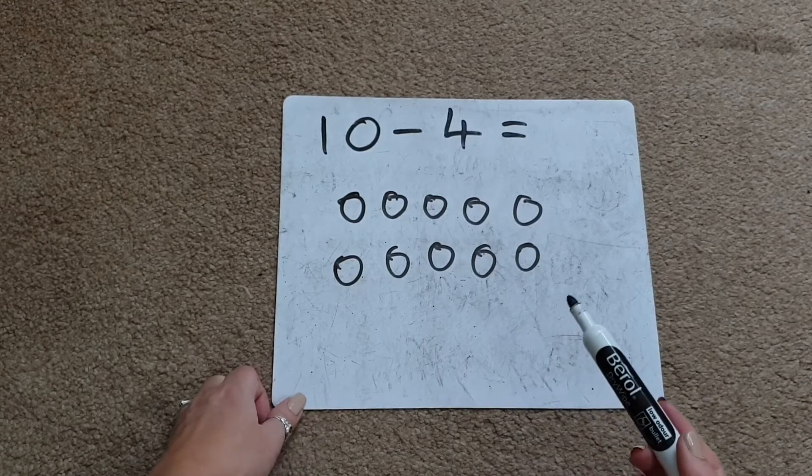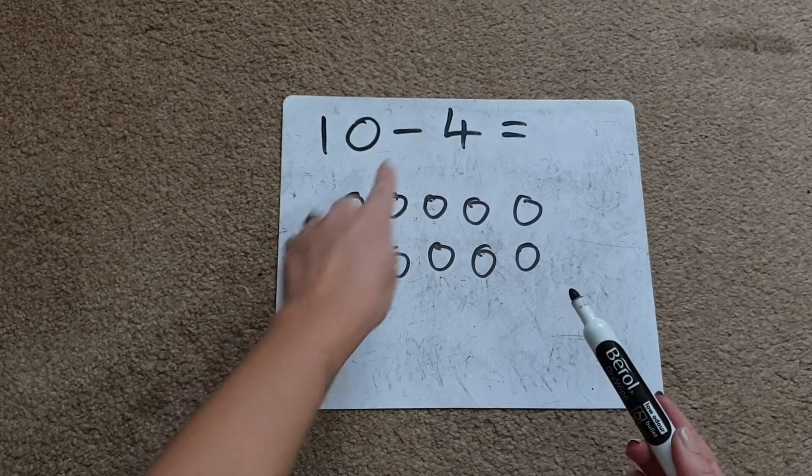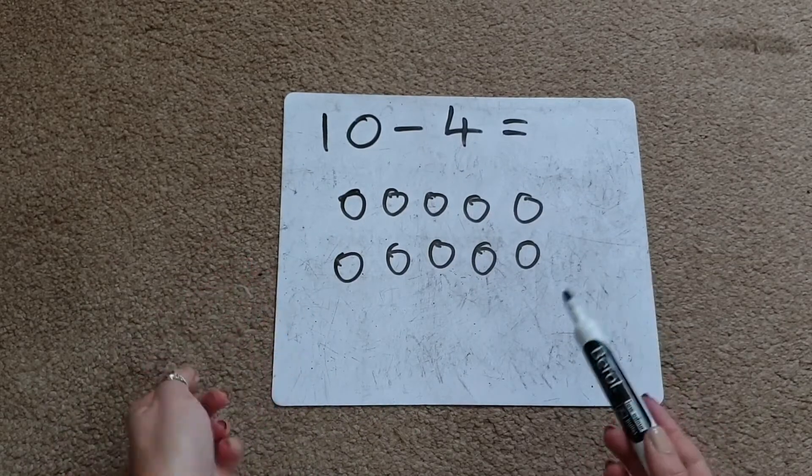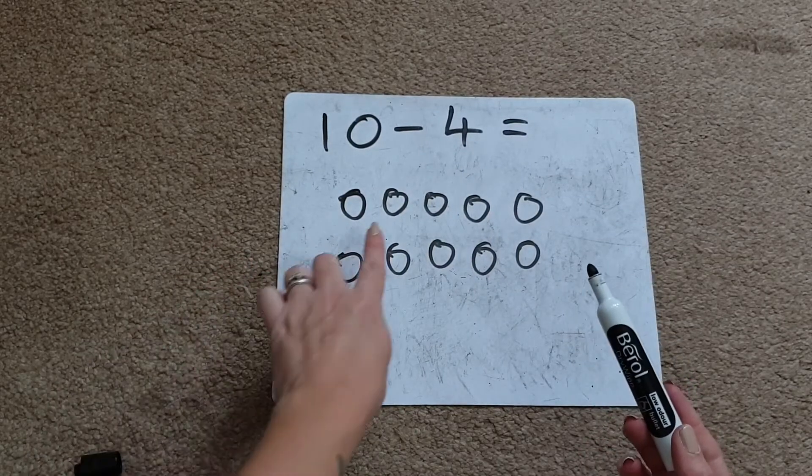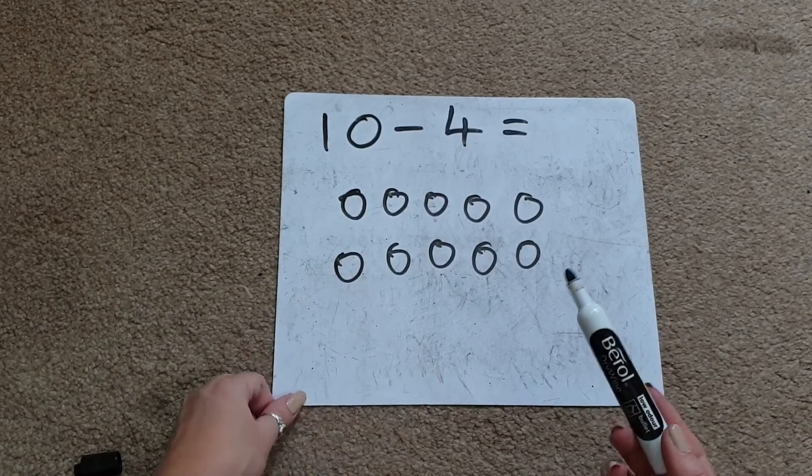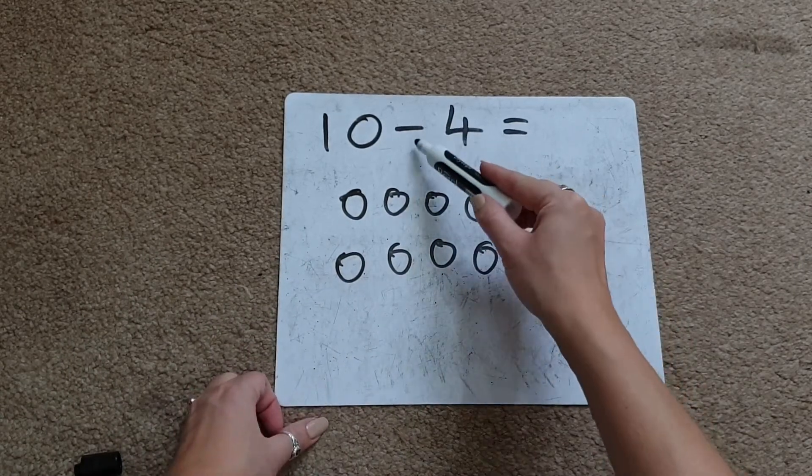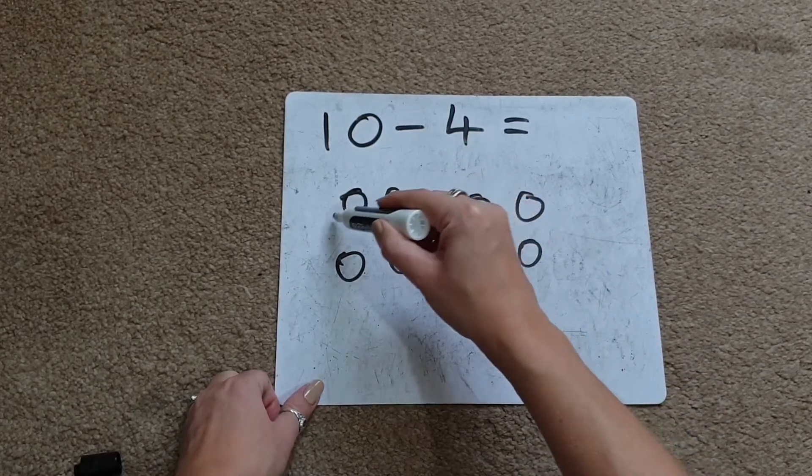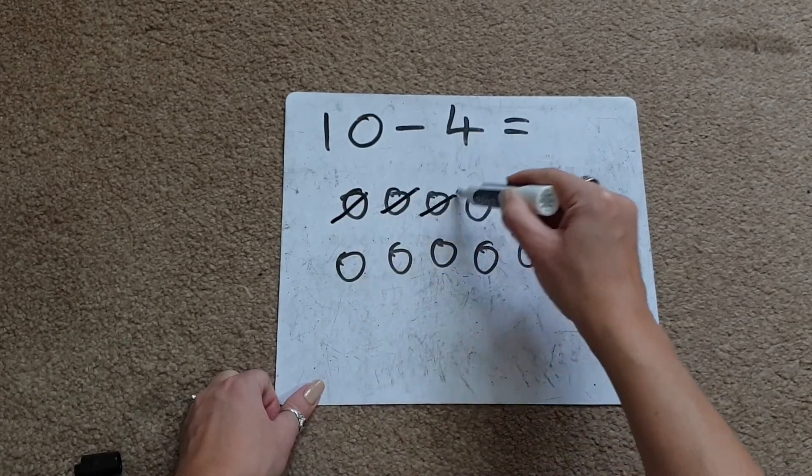Then we're going to talk again about taking 4 away. So we're actually going to physically take 4 away, but instead of this time taking the counters away, we're actually just going to cross out the pictures to take away. So for take away 4, we're going to cross out 4 of our circles. 1, 2, 3, 4.